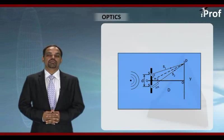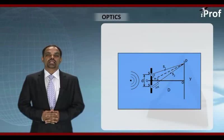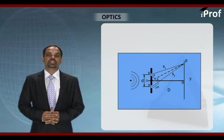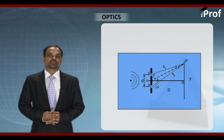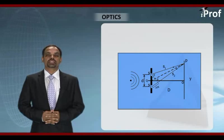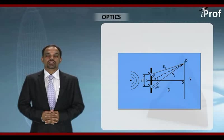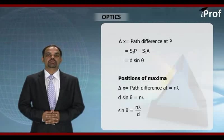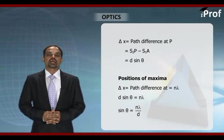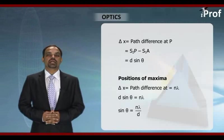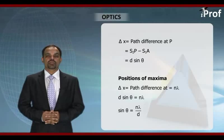If I consider any general point P on the screen, to calculate path difference, here we will have only geometrical path difference. It is very clear from the geometry of the arrangement that waves from S2 will travel longer distance compared to waves from S1. Therefore, path difference at point P can be simply written as delta X is equal to S2P minus S1P.